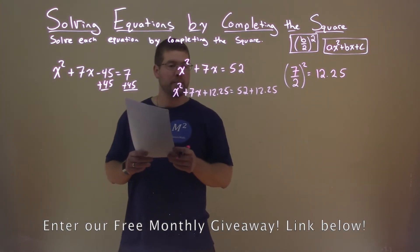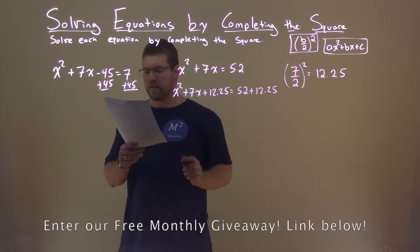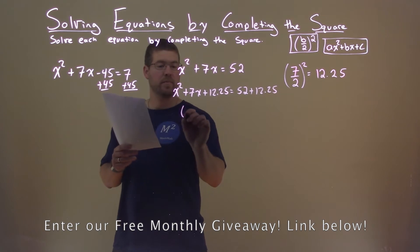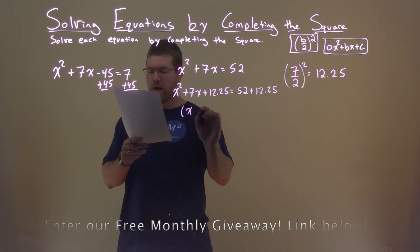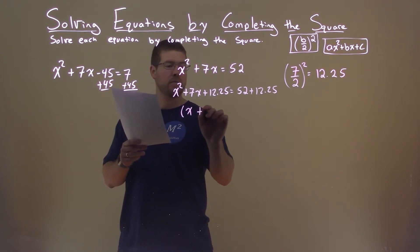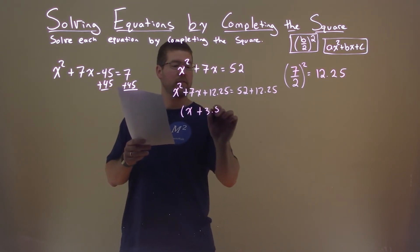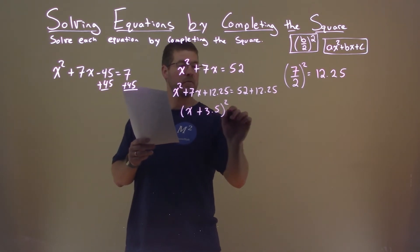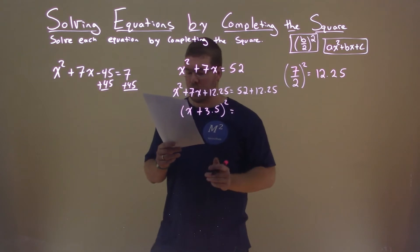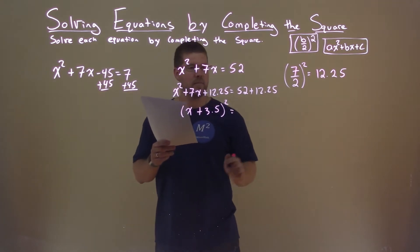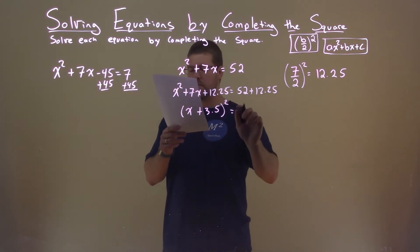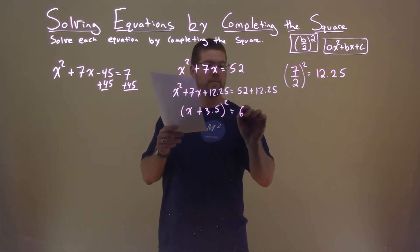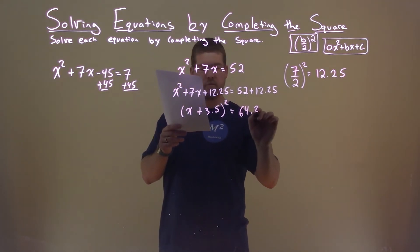So now where we go from here — the left-hand side is a perfect square. We have x plus 3.5, all squared, and the right-hand side simplifies to 64.25.